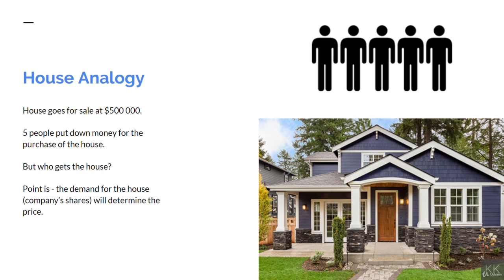Obviously the seller can only sell to one person, so what happens? The price is bid up until the person who offers the highest price is the last person standing. Let's say one buyer offered the highest price of five hundred and thirty thousand dollars — this is the person who gets the house. That is how the price of the house can increase; it all comes down to the demand.